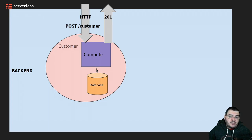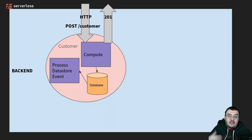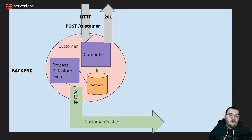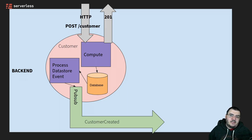Our database is going to kick off asynchronous processing in the background on this new customer. It's going to trigger another compute section that processes the event that happened in the database — adding a new user. And ultimately what this compute instance is going to do is submit this event into a PubSub layer. We have a PubSub topic called customer created, and in that we're going to send a message to say a new customer was created and here are the details. This will be the same if we have an update or a delete event — changes get pushed into a PubSub topic for that specific event.